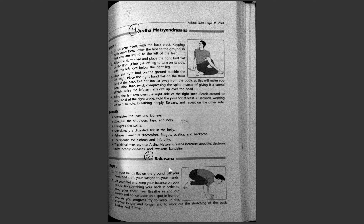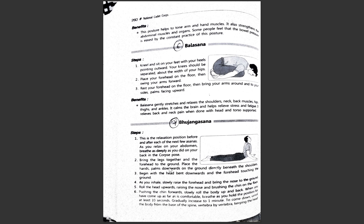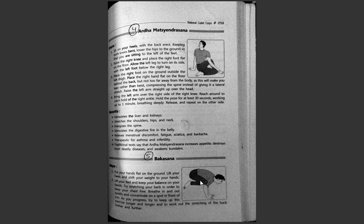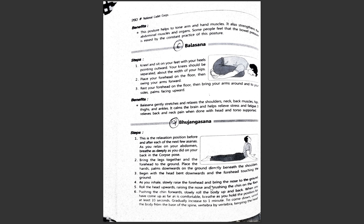The next asana is Bakasana. The benefits are that it helps to tone the arm and hand muscles, strengthens the abdominal muscles and organs, and some people find that bowel pressure is eased by constant practice of this posture. This pose gives you a great stretch while also significantly increasing your strength and stamina.